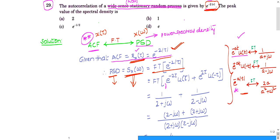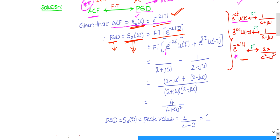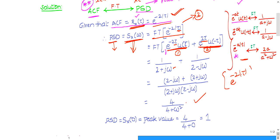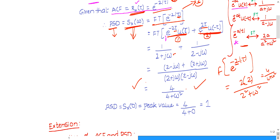Splitting |τ| into positive t·u(t) and negative t·u(−t), then applying the first and second formulas respectively gives the same result as using the third formula directly. Applying the third formula: with a = 2, the Fourier transform of e^(−2|τ|) gives 2×2/(2² + ω²) = 4/(4 + ω²). This is the power spectral density.